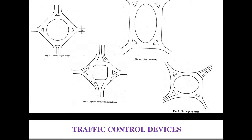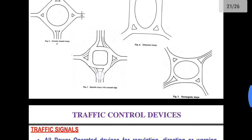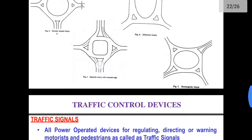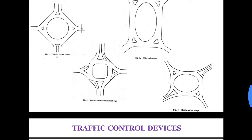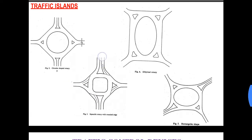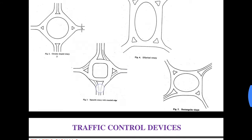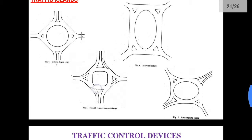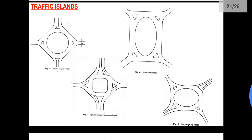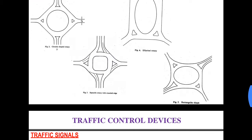One cycle is when the traffic moving — suppose the traffic entering the intersection from the south, and later on it will move to the west, then to north, then east, and then again to the south. This completion of this process is known as one cycle.